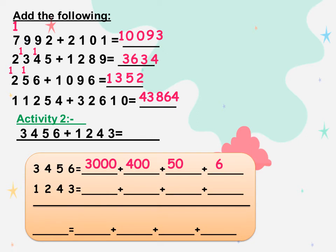The next: 1,243. Digit 1 is 1,000, so we add three zeros. Digit 2 is 200, so we add two zeros. Digit 4 is 40, so we add one zero. And the last digit 3 is 1, so we write 3 without any zeros.